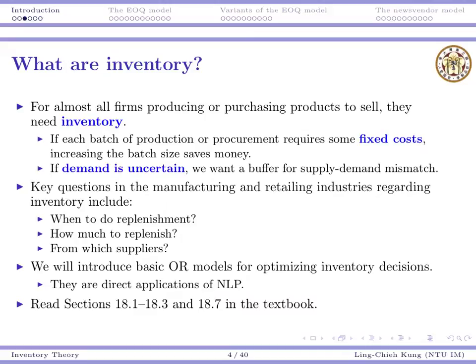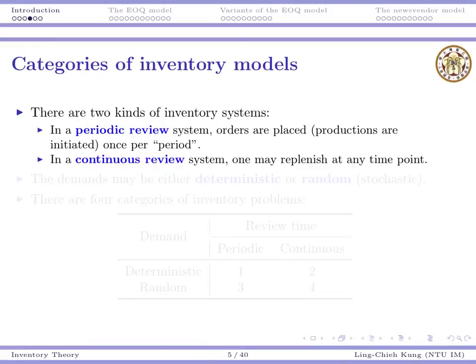So regarding the textbook, please read the related sections. Before we get into model details, let's first sit at a high level and talk about categories of inventory models. There are at least two kinds of inventory systems. One is called a periodic review system.